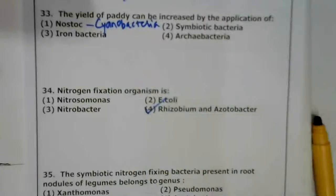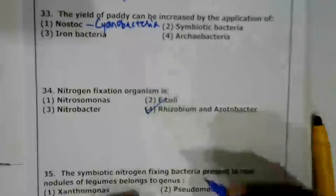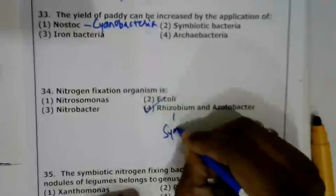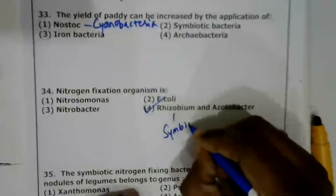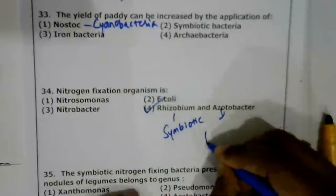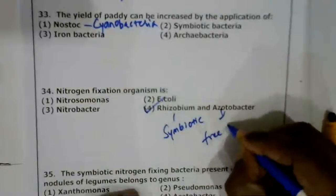To clarify: Rhizobium is a symbiotic nitrogen fixer, whereas Acetobacter is a free-living nitrogen fixer.